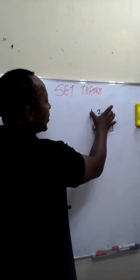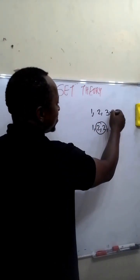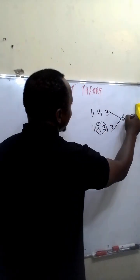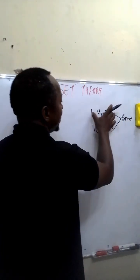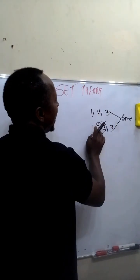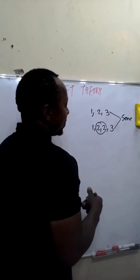But in the context of sets, these two, this and this, are the same. In the context of sets, 1, 2, 3 and 1, 2, 2, 3 are the same.